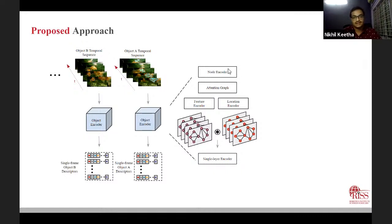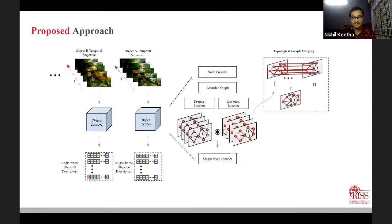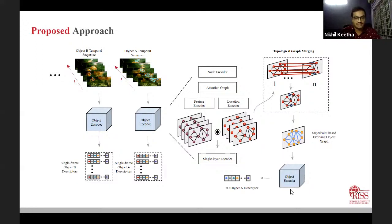We build an evolving topological graph representation accumulating knowledge across multiple viewpoints. We do triangulation on keypoints to get an object graph, match these graphs across frames, and encode this evolving graph to a trained object descriptor providing robust semantic loop closure.